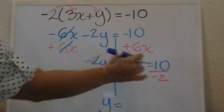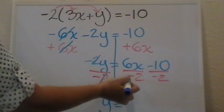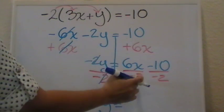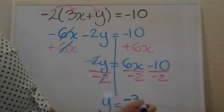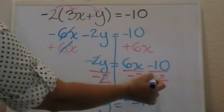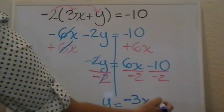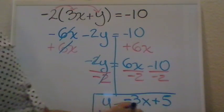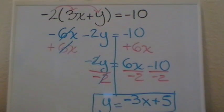And now you have this right here. Positive divided by a negative gives you a negative. 6 divided by 2 is 3. You drop your x. And then we do it again. Negative divided by a negative is positive. 10 divided by 2 is 5. And this is your final answer.